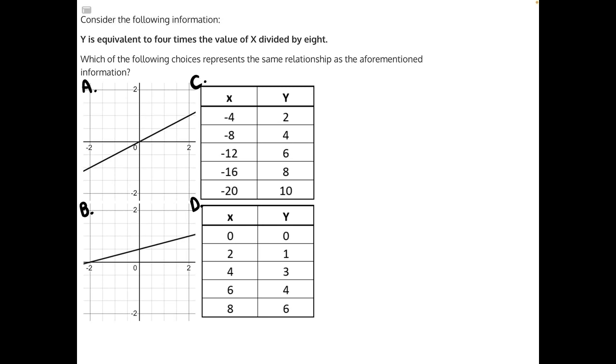Consider the following formula. Y is equivalent to 4 times the value of x divided by 8. Which of the following choices represents the same relationship as the aforementioned information?